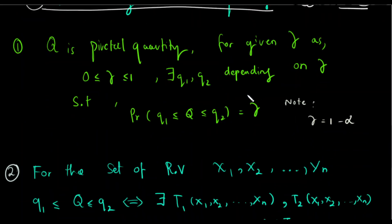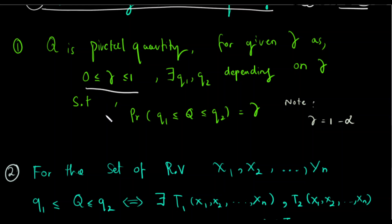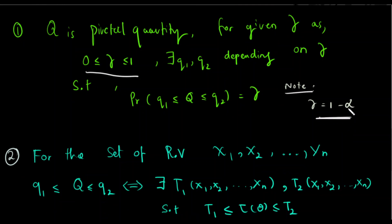If we are talking about the conditions in the pivotal quantity method: for a given gamma, where gamma is between 0 and 1, there exist q1 and q2 depending on gamma such that the probability that capital Q is between q1 and q2 equals gamma. So the probability of Q being in (q1, q2) is gamma, and we will also talk about the value of alpha.